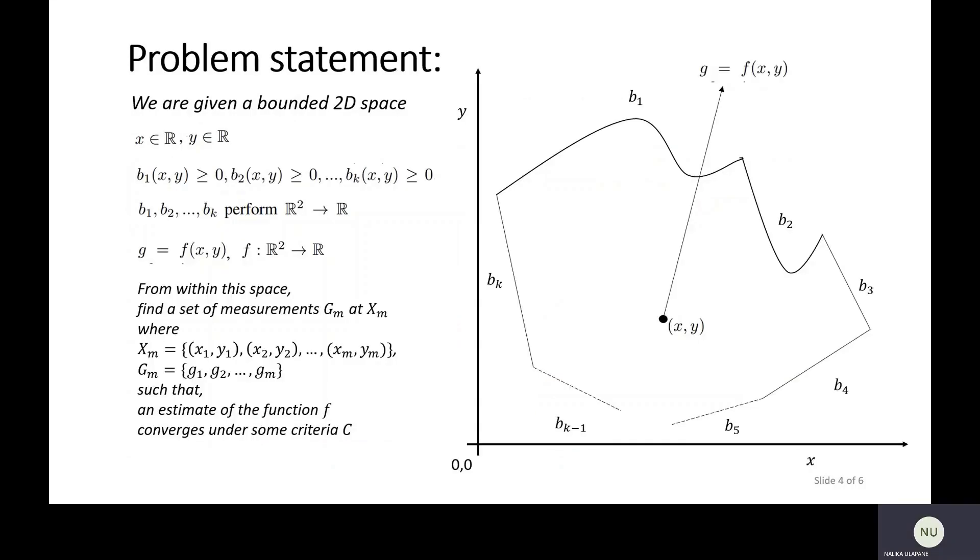Now I go on to the problem statement. The problem we are focusing on is limited to 2D. We are addressing a measurement taking task done in a 2D space. We are given a bounded 2D space, and the space can have K number of boundaries, and these boundaries can be nonlinear. A general point within this space will have a coordinate X and Y. We say this space will carry a scalar field given as G equals F of X and Y. We are supposed to measure G against X and Y such that we are able to uncover the function F.